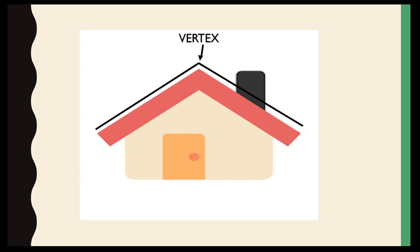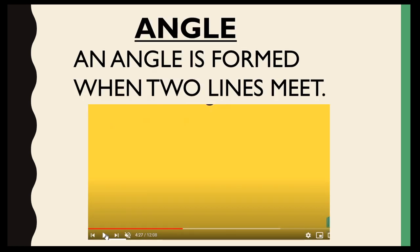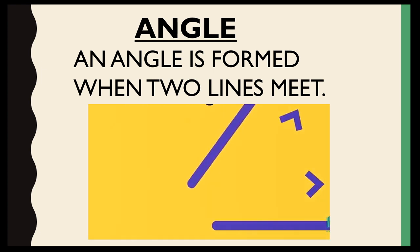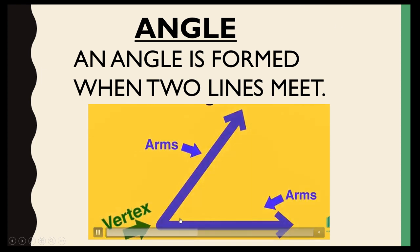Now we will define the angle. An angle is formed when two lines meet. Or you can see in this clip, two lines are meeting at a point called vertex. These two lines will be known as arms, and the angle is formed between these lines. So this whole thing is an angle. Lines will be called as arms of the angle, and this will be the vertex of an angle.